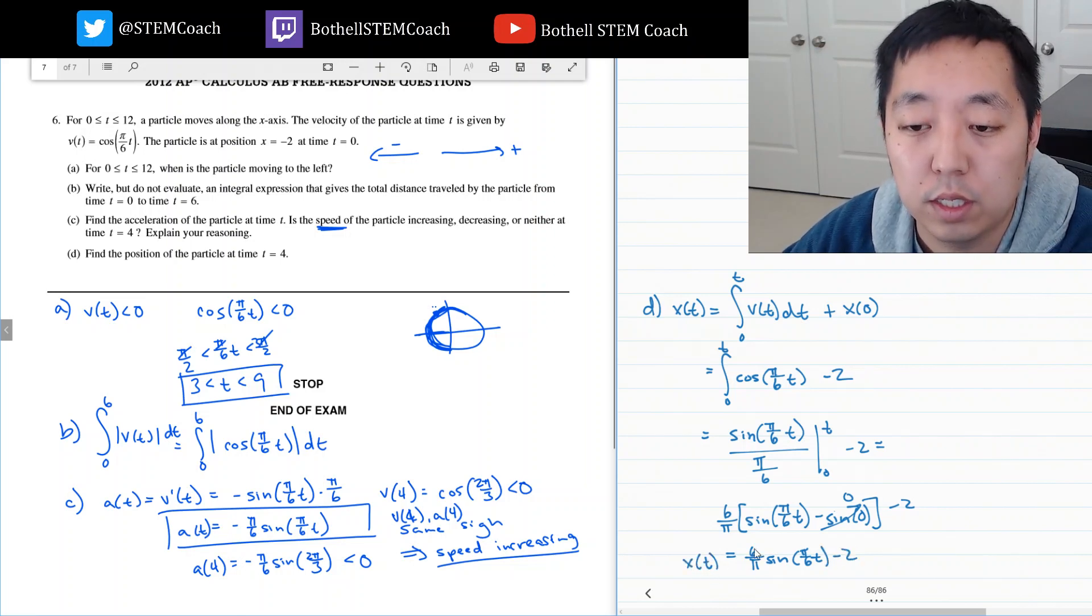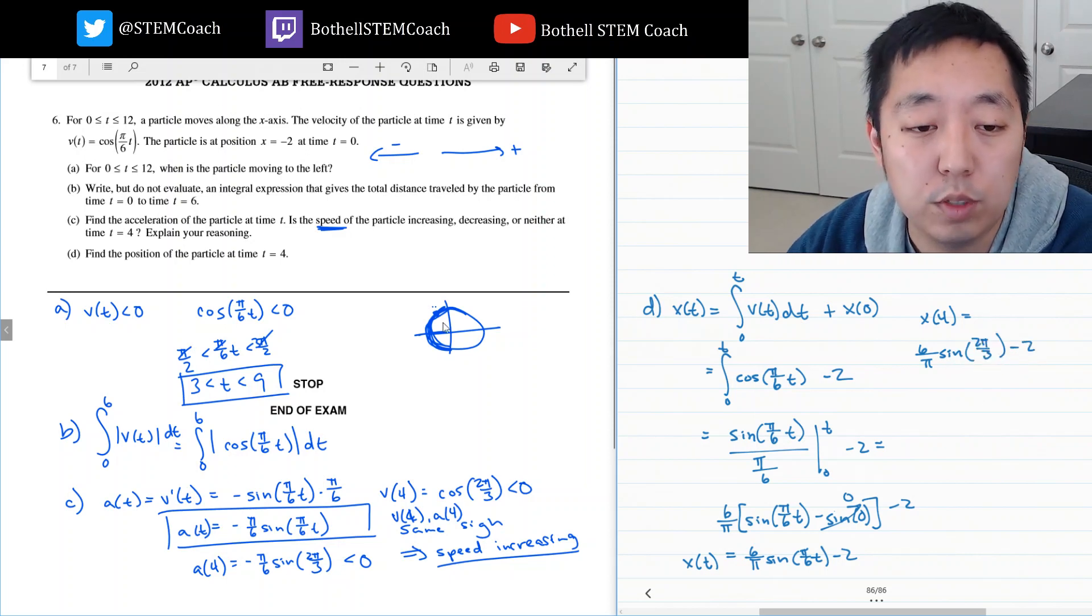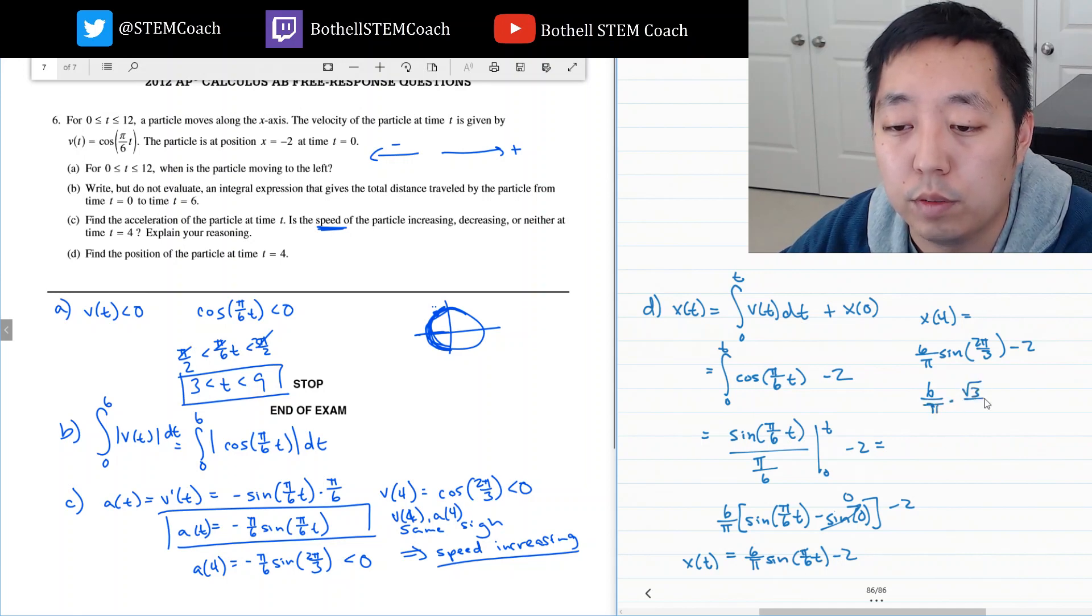Find the position at 4. So therefore x of 4 is 6 over pi sin 2 pi over 3 minus 2. Sin of 2 pi over 3 is root 3 over 2, the y value. 6 over pi times root 3 over 2 minus 2. That can cancel to 3 root 3 over pi minus 2. That's its position.